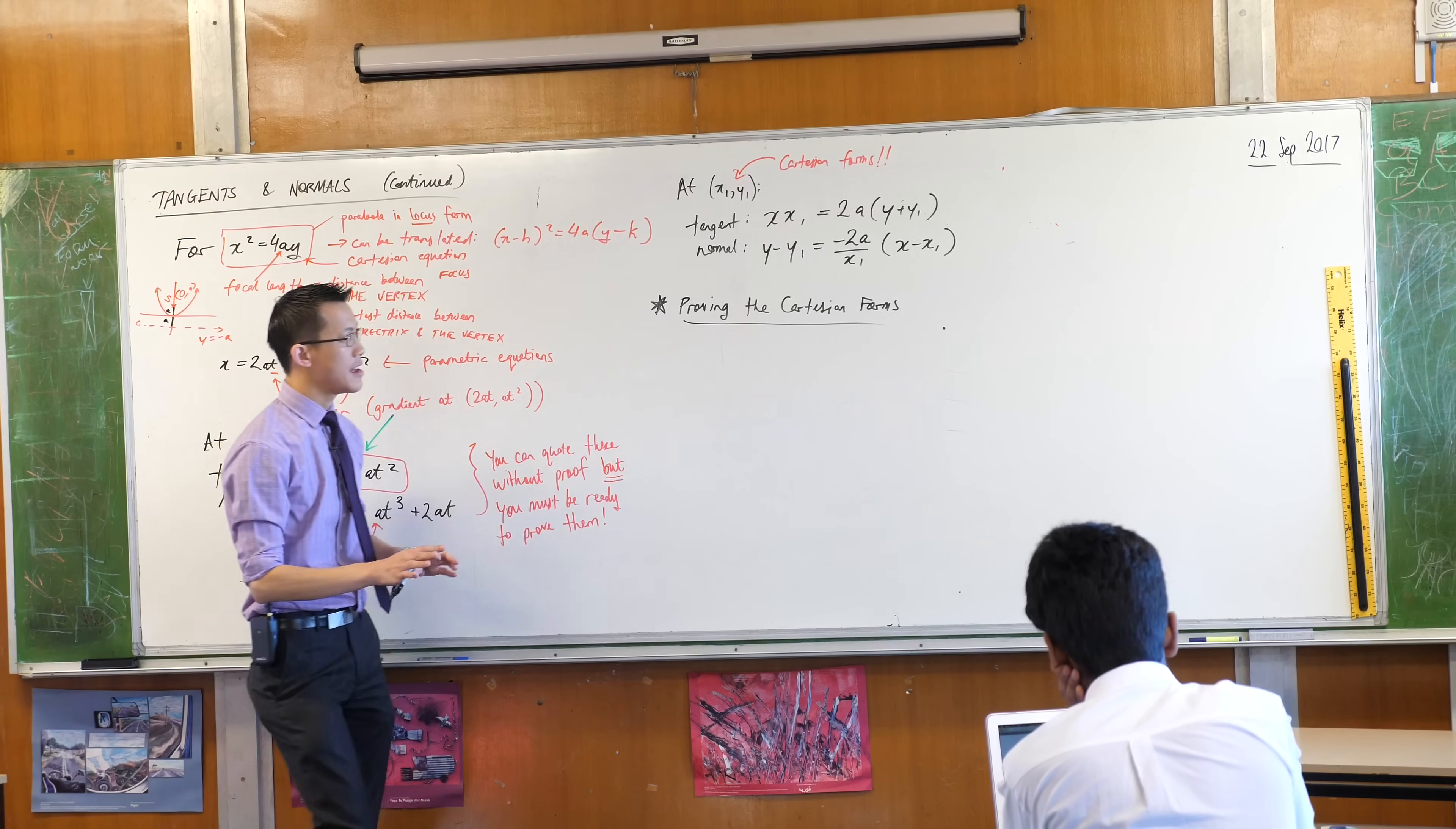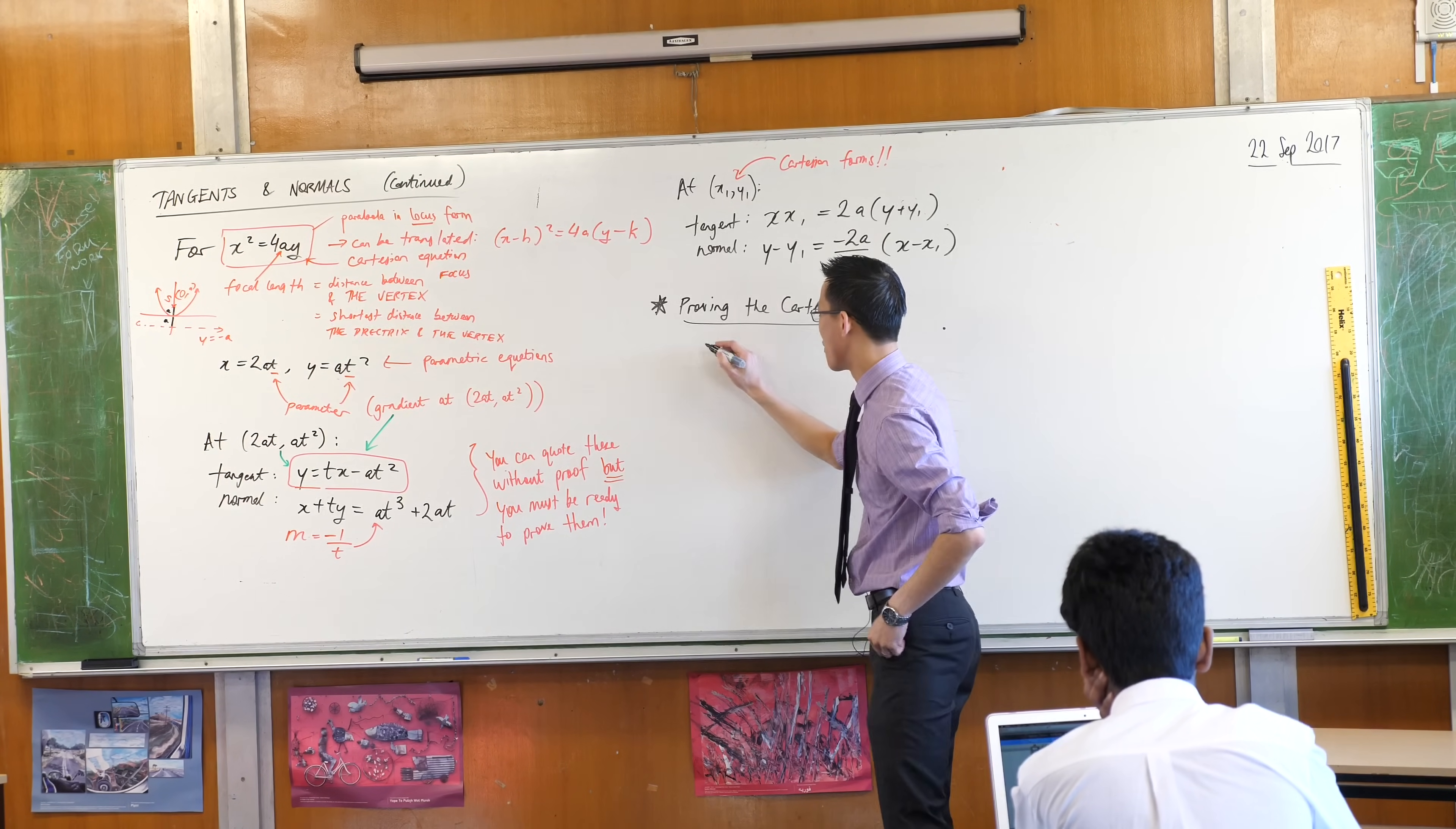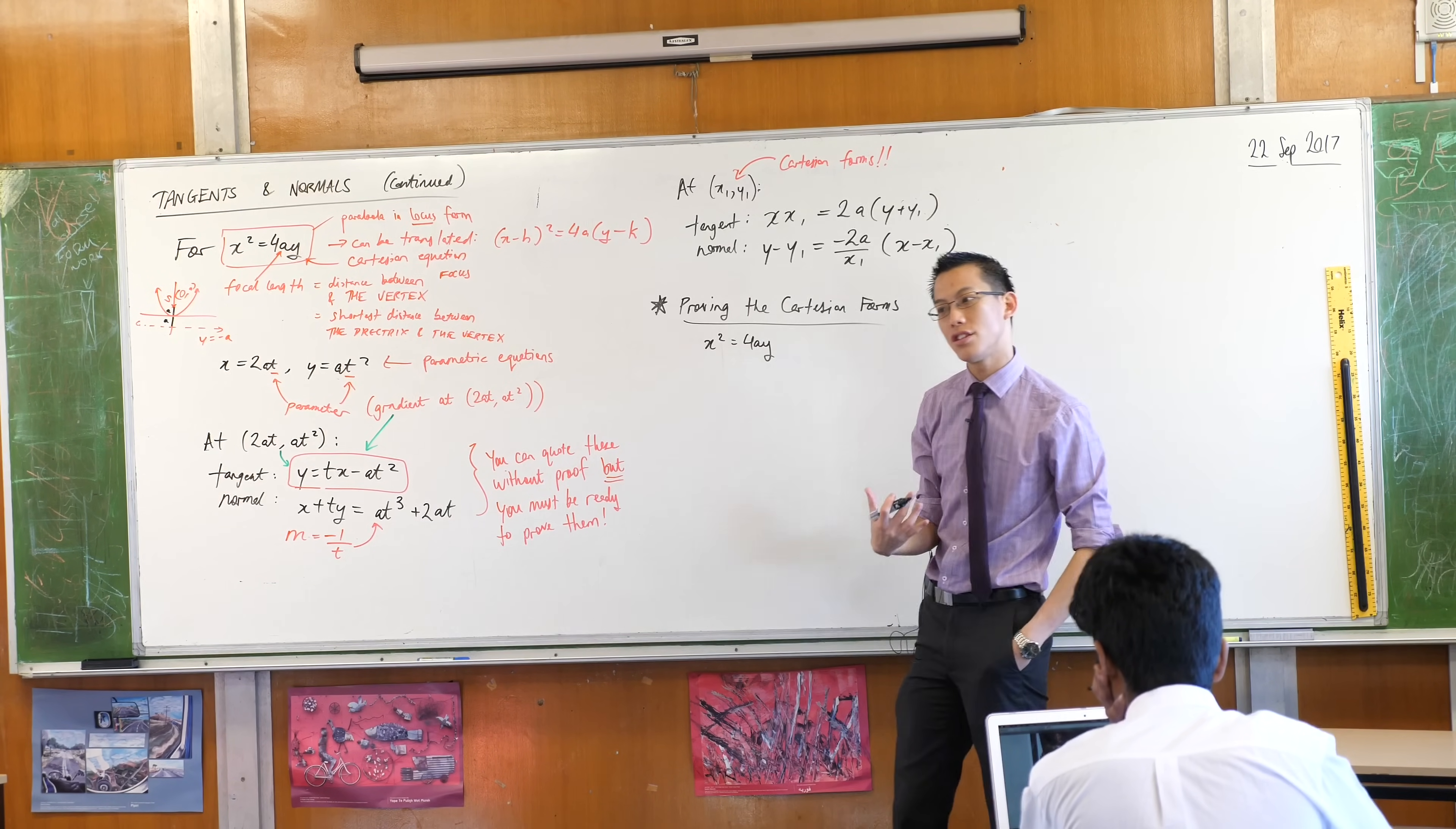So what we're going to try and do is tackle the same idea of tangents and normals but we're going to stay as far away from t as we possibly can. So I'm going to go right back to the first line that we wrote down, x squared equals 4ay. If x squared equals 4ay and I want to find a tangent to this thing, forget about all the stuff you knew about parameters before, if I want to find a tangent to this thing what information do I need?